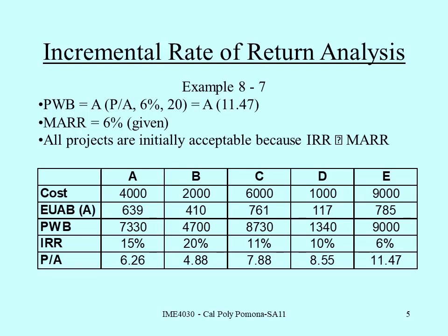Also calculated is the internal rate of return. Using the methodology from chapter 7, we find the rate of return for each of those alternatives. The last column shows what the actual P over A factor is for six percent for twenty years — those are the numbers from the tables. This is our basic table of information, and now we'll go through and illustrate this method.